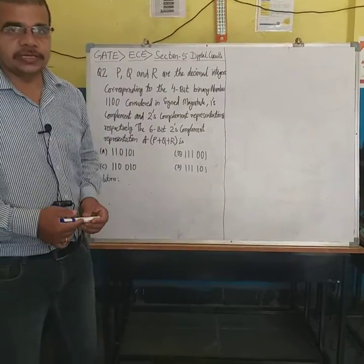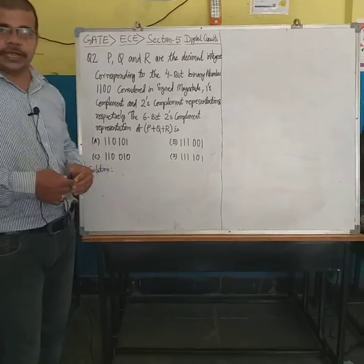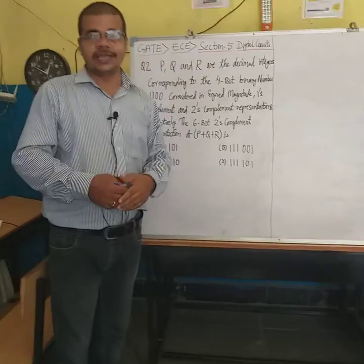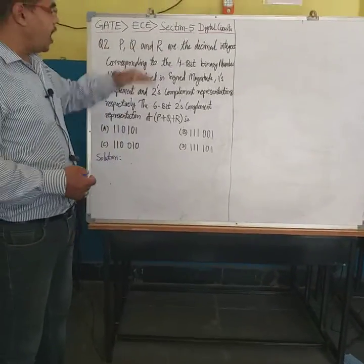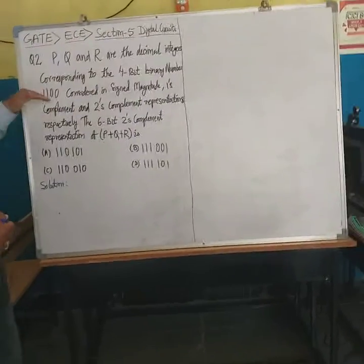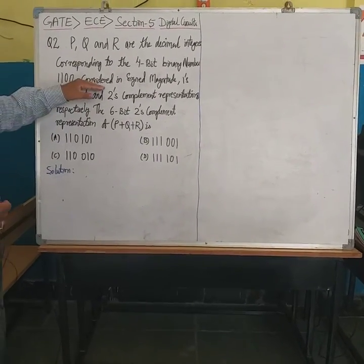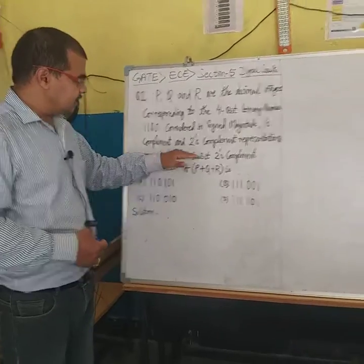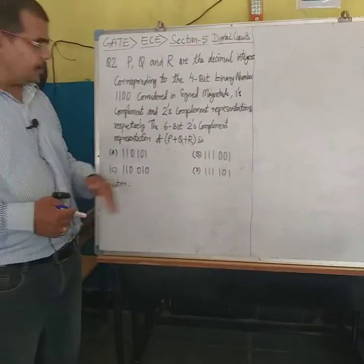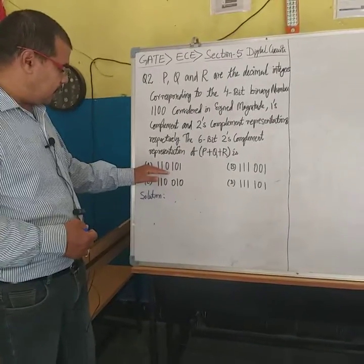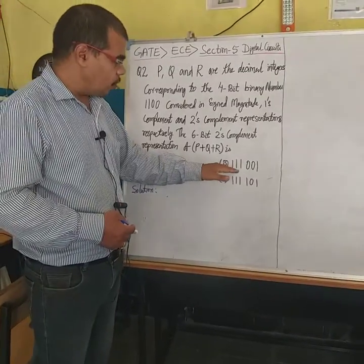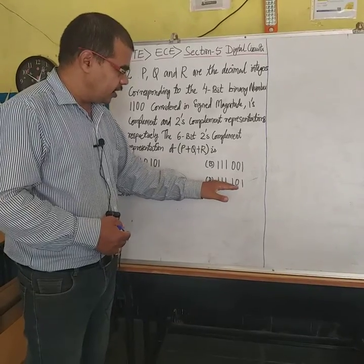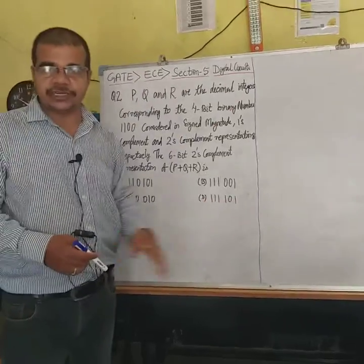Good afternoon. In this video lecture series, this is a GATE 2020 question from GATE EC Section 5, Digital Electronics. The question states: P, Q, and R are the decimal integers corresponding to the 4-bit binary number 1100, considered in sign magnitude, 1's complement, and 2's complement representation respectively. The 6-bit 2's complement representation of P plus Q plus R is required. The options are: 110101, 111001, 110010, and 111101.